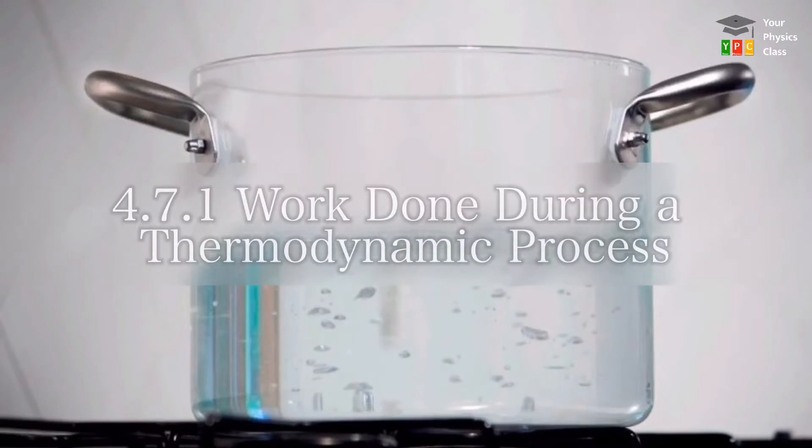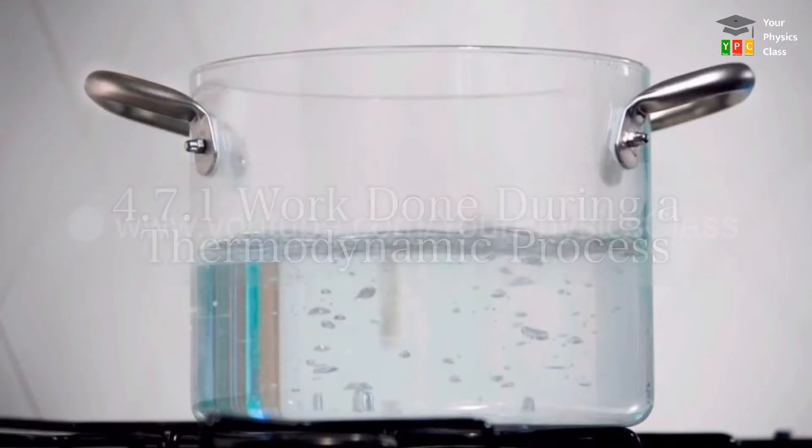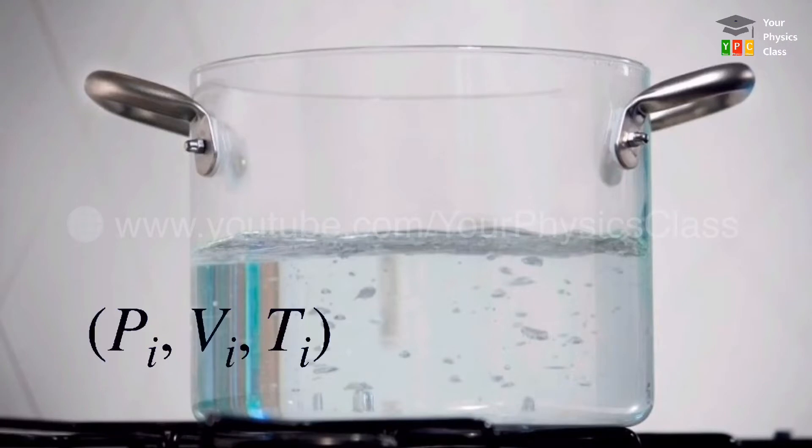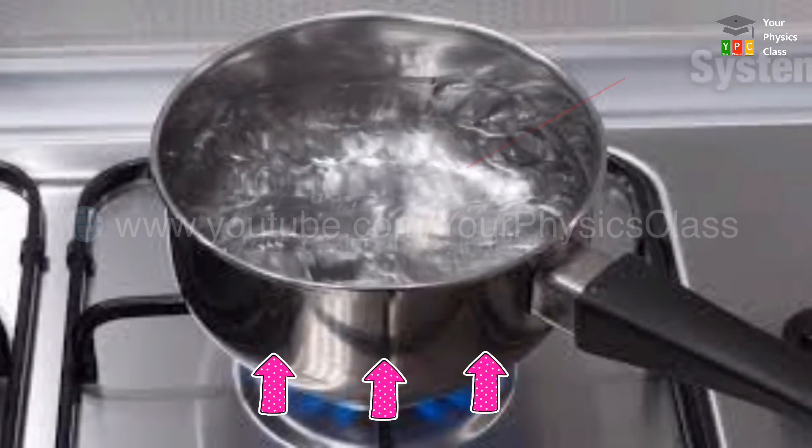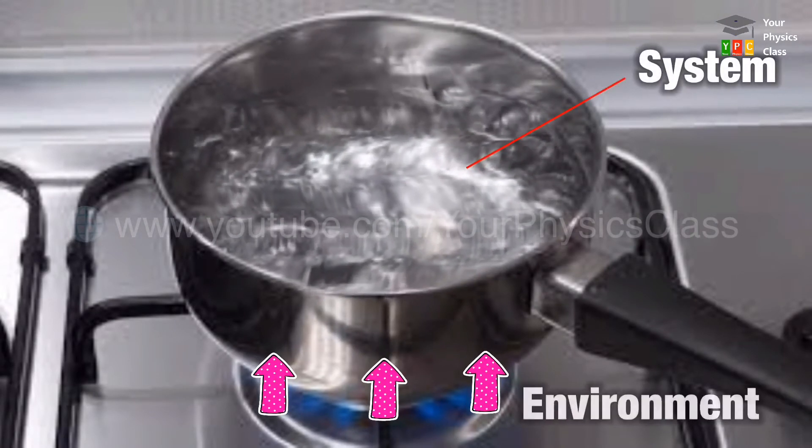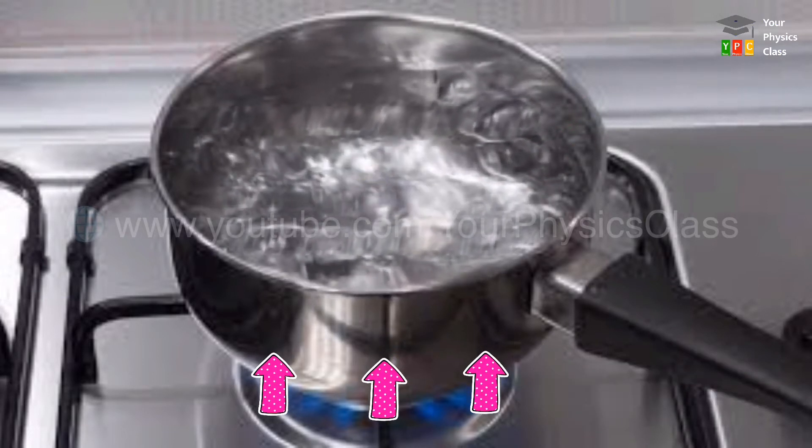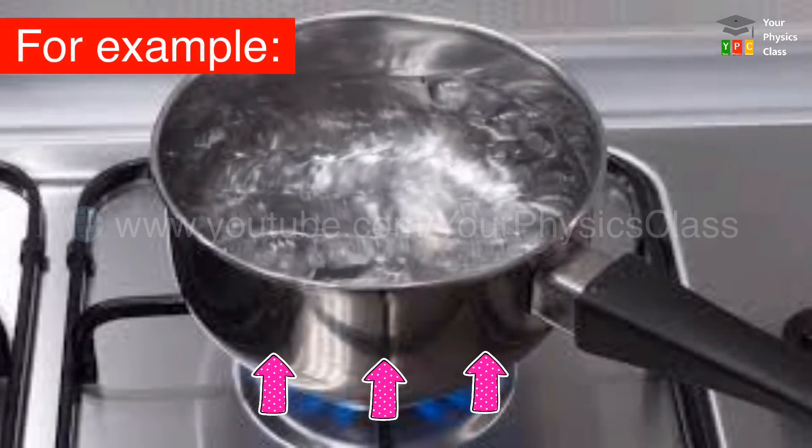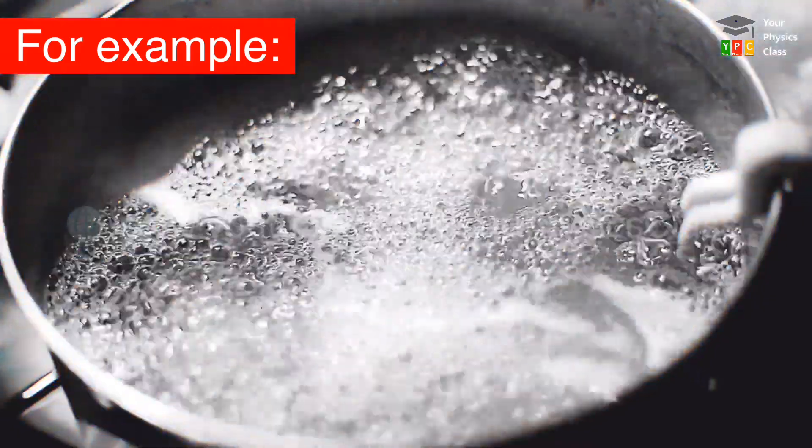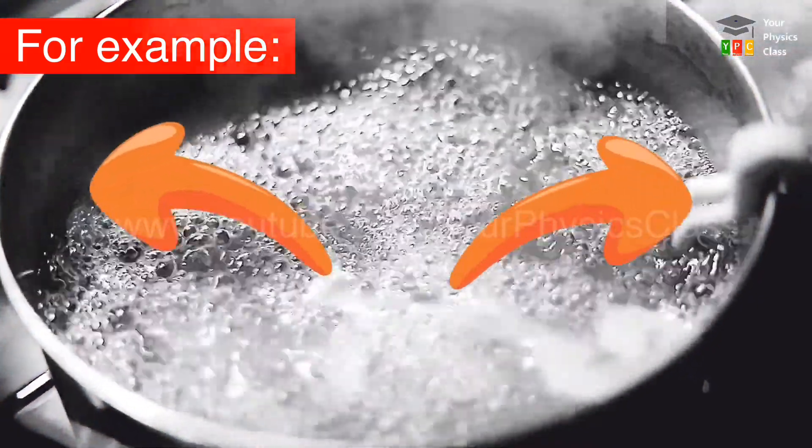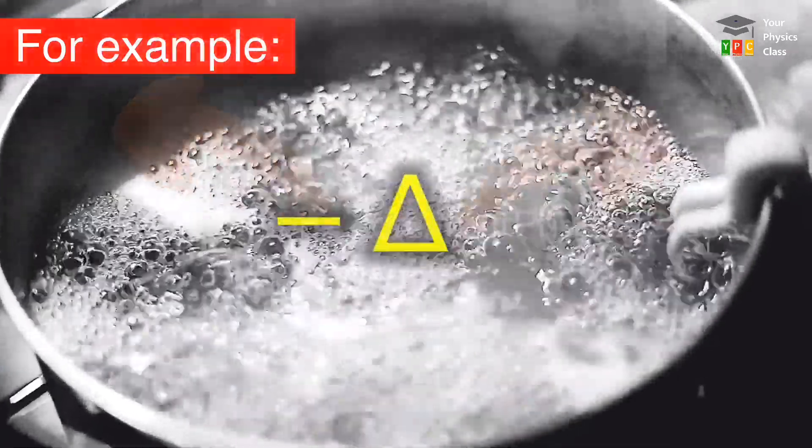The thermodynamic process is a procedure by which the initial state of the system changes to its final state. During such a change, there may be a transfer of heat into a system from its environment, that is positive heat. For example, when water boils, heat is transferred to the water. Heat may release from system to its environment, that is negative heat.